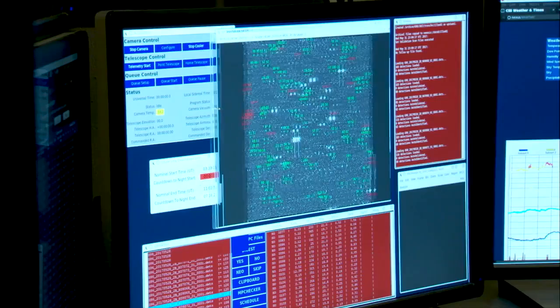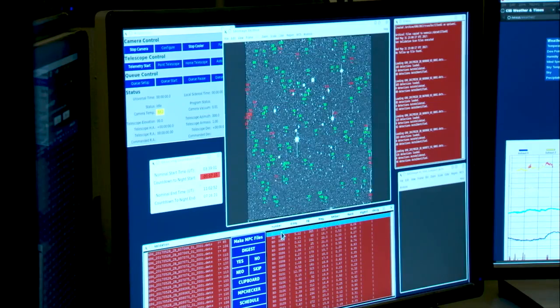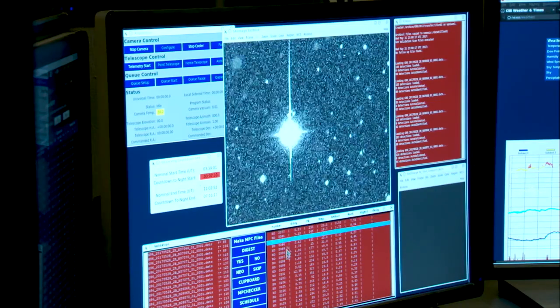Our software compares those images and identifies things that are not moving, which are stars, and removes those. It identifies things that are transient from frame to frame and tries to link those up.